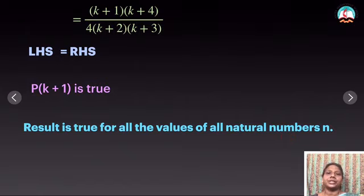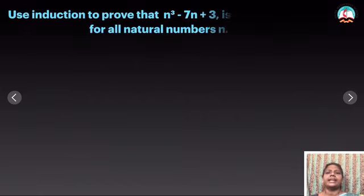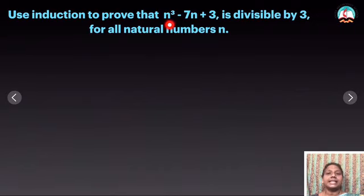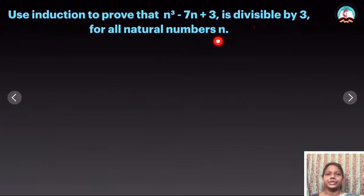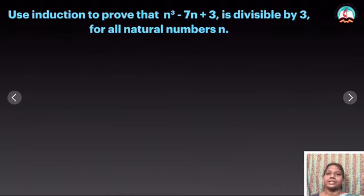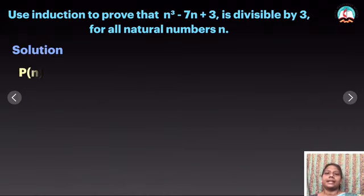Now let me see one more problem. Use induction to prove that n³ - 7n + 3 is divisible by 3 for all natural numbers n. The question itself says to use mathematical induction. So now what we have to do is take P(n) equal to the expression — that is the first step.